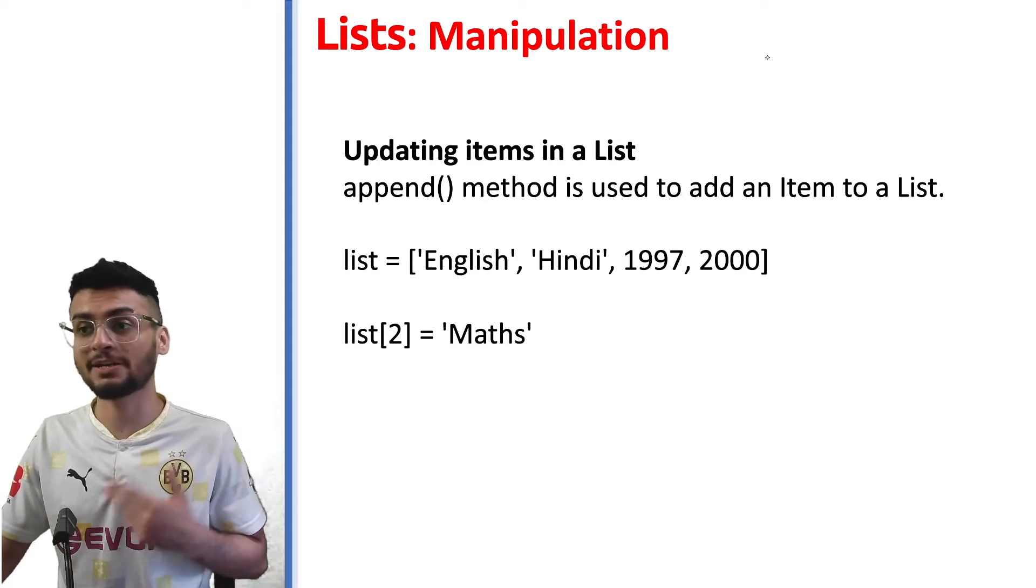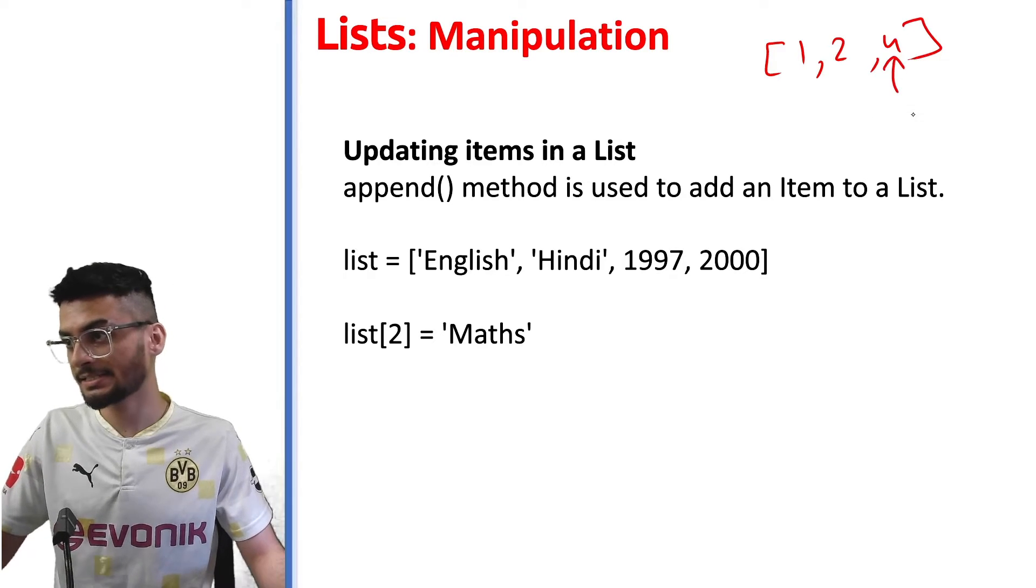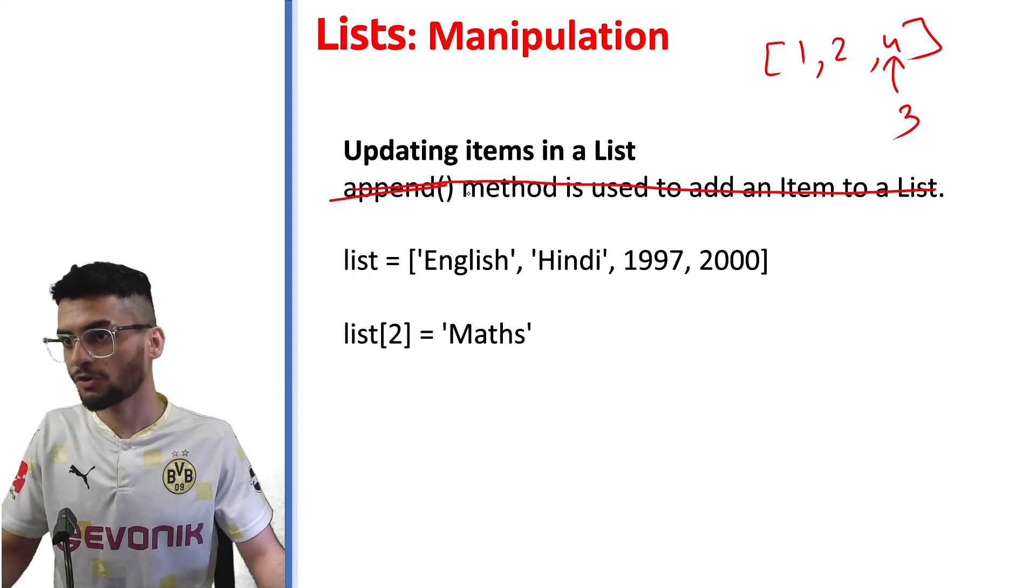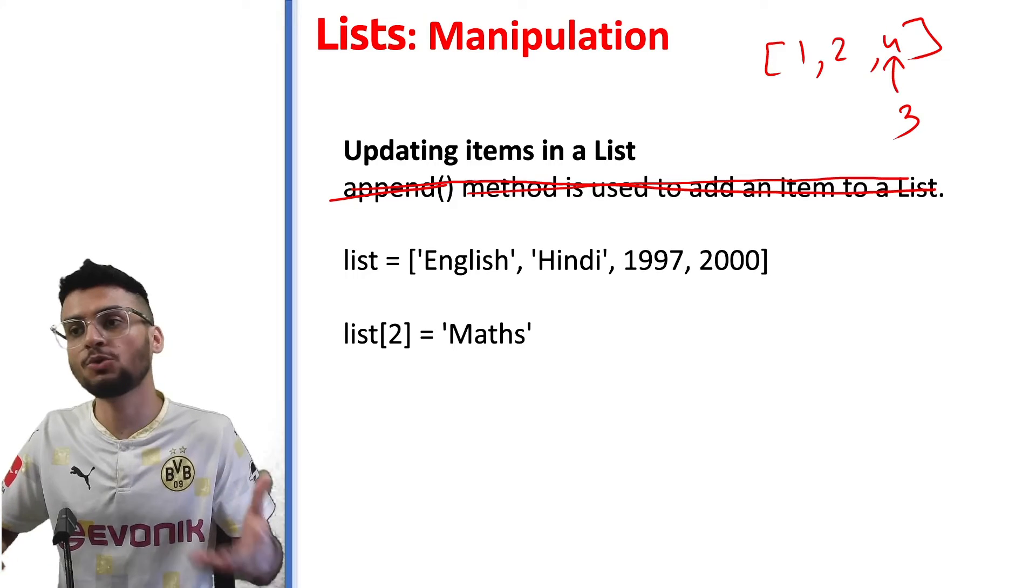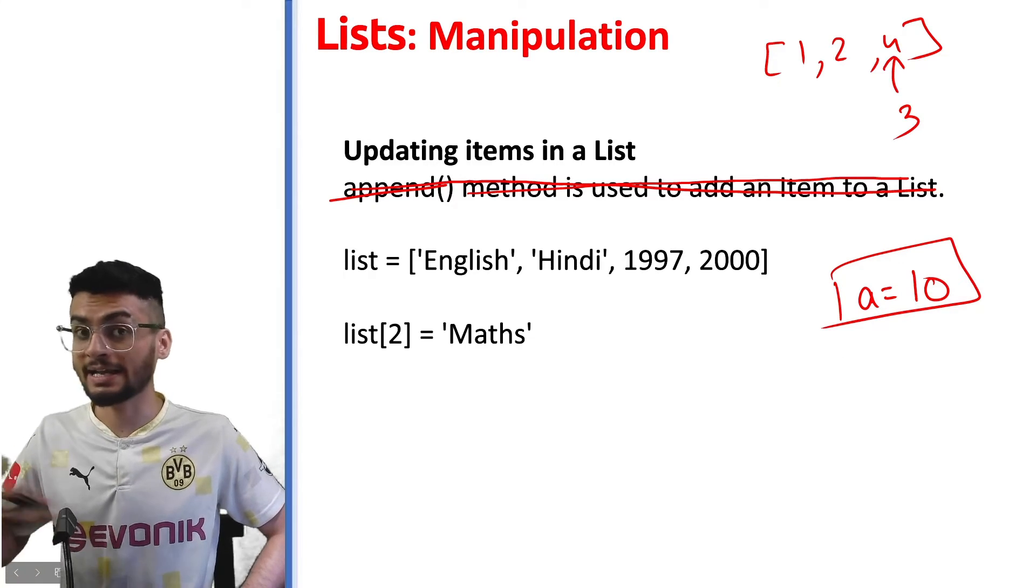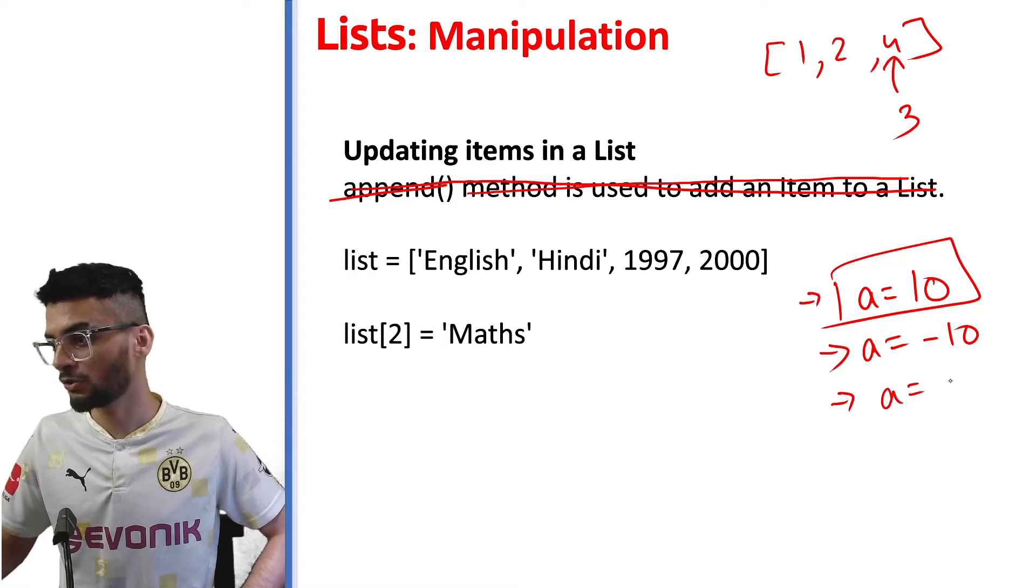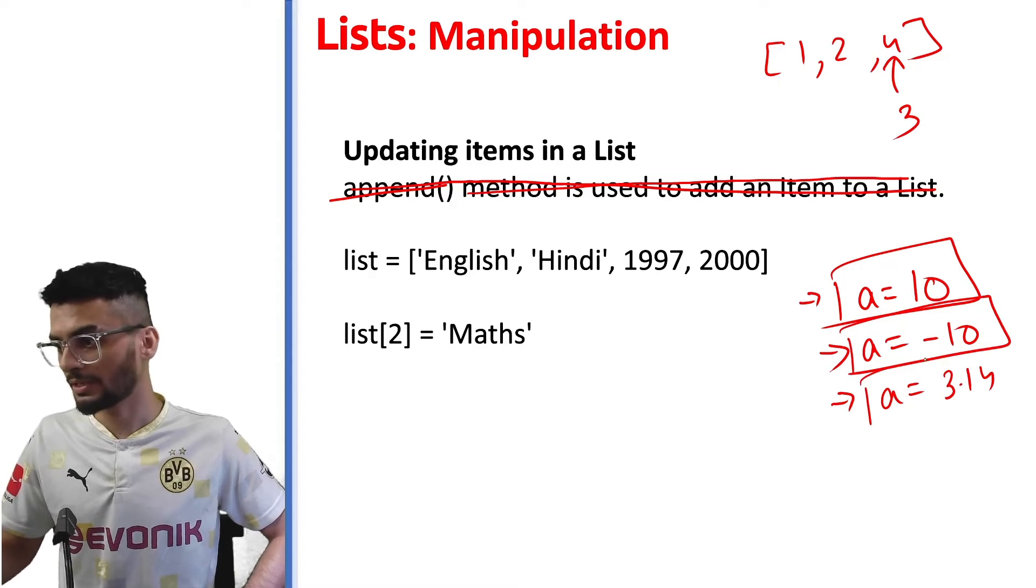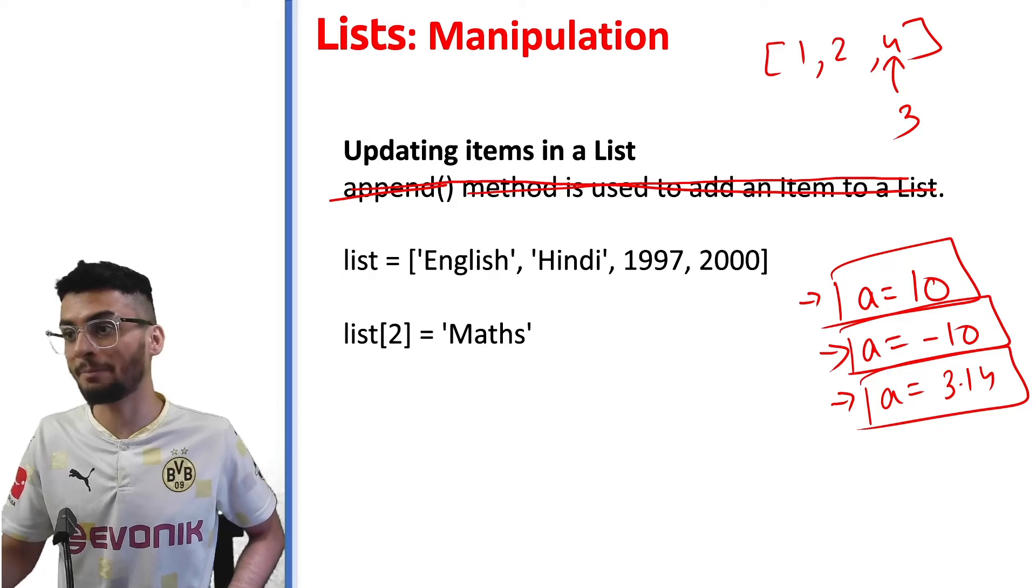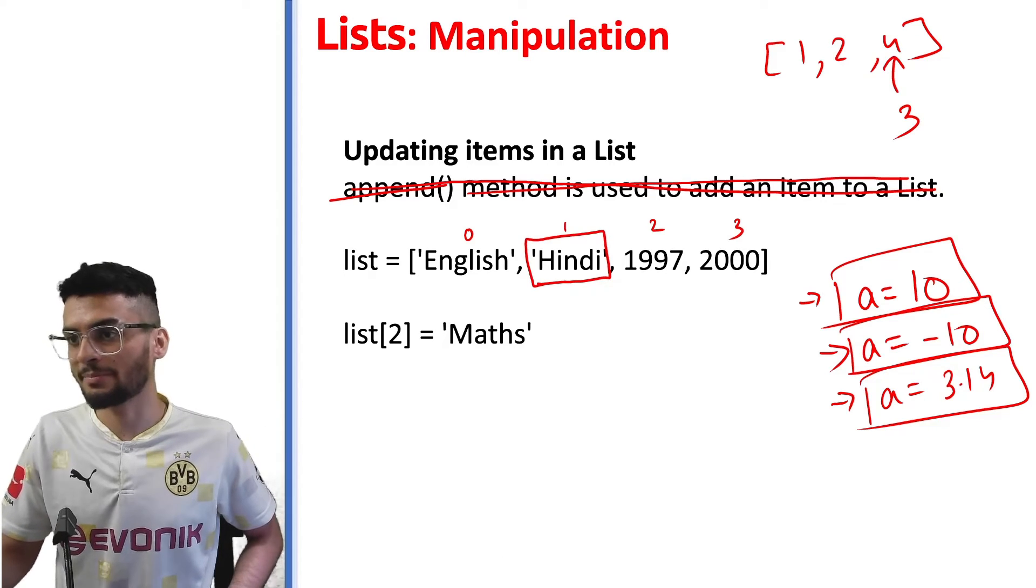Next is how can you add an element to a list or maybe update an element in a list. Let's say I already have a list like this but I want to change this into three or maybe some other element. For that specific purpose, we use the index of the list and we allot a new value to it. If you remember, we assign variables like this, right? This means the value of a is 10. I can again change the value of a to minus 10 by just writing the next statement like this. I can again change the value of a to something like 3.14. So each time this statement is executed, we can update the value of a. On similar lines, if I want to update any element of the list, I need to know the index of that element.